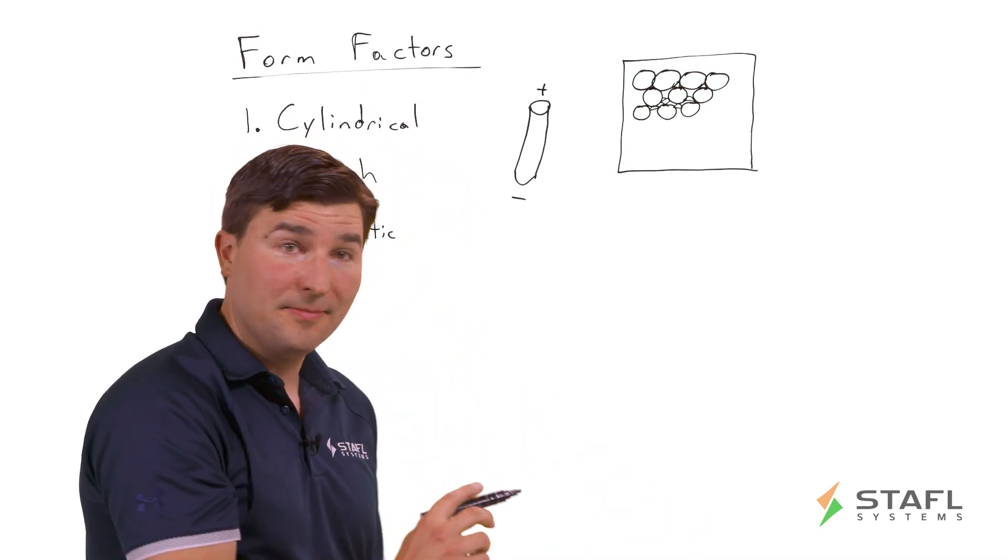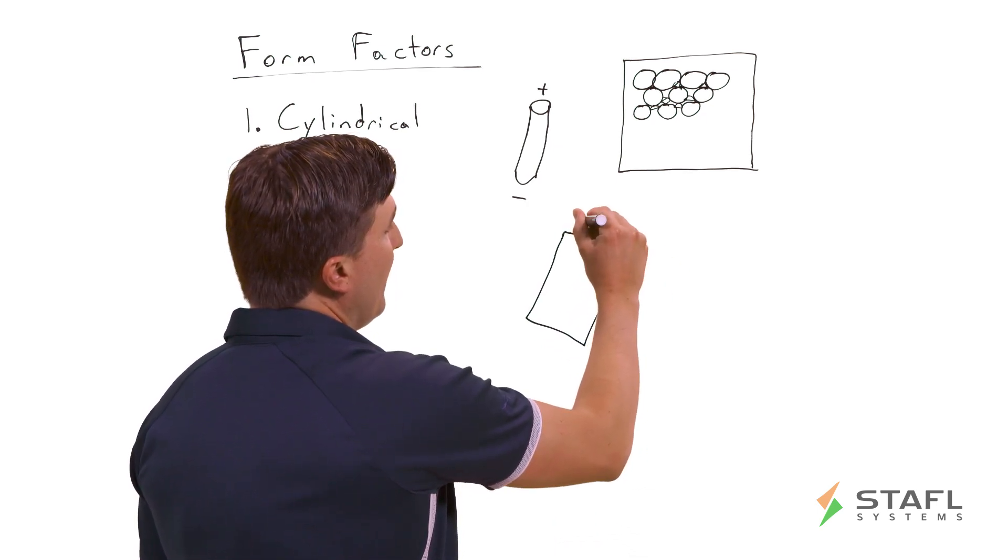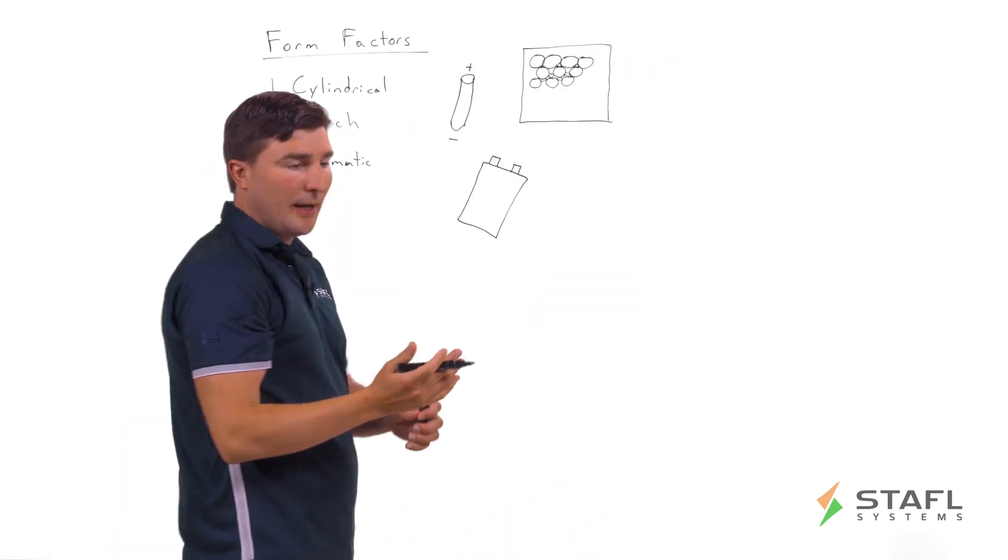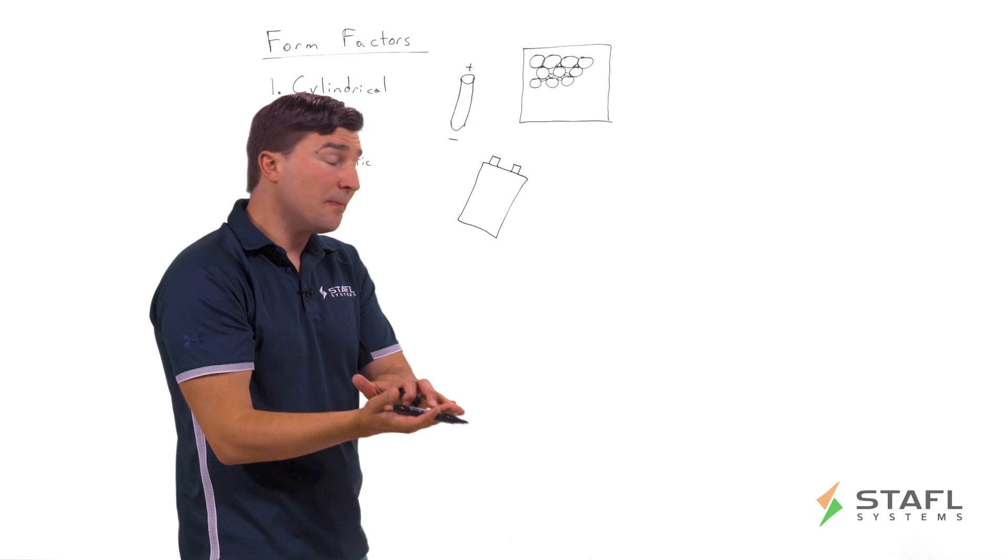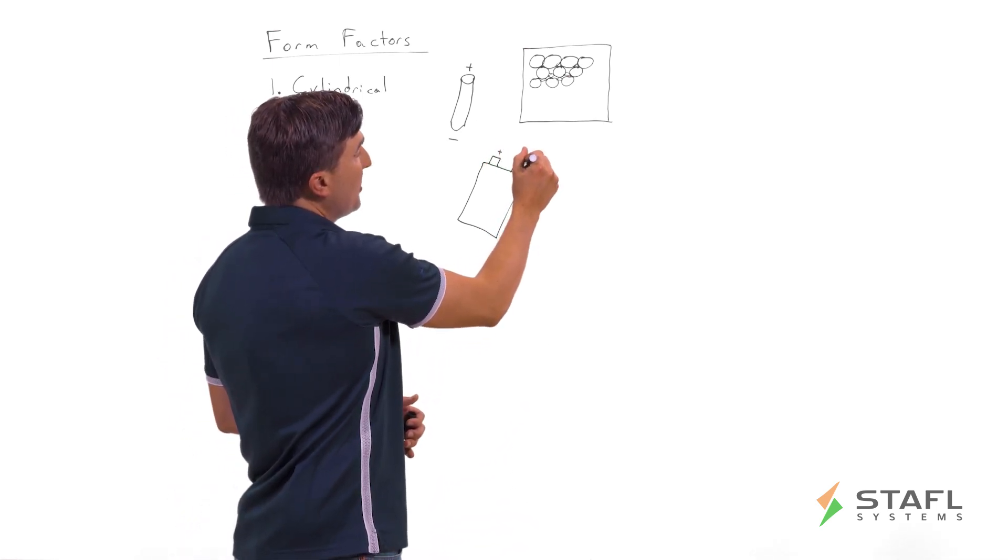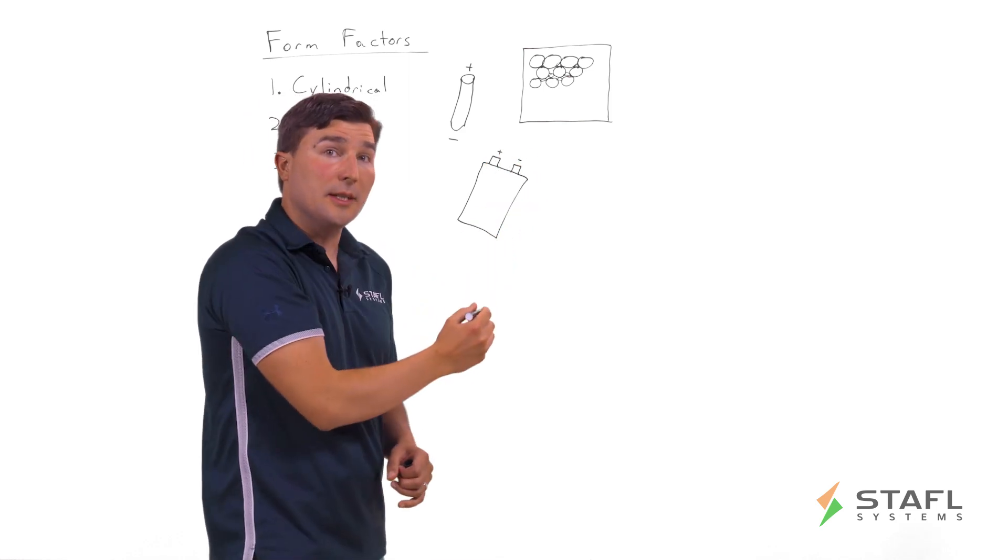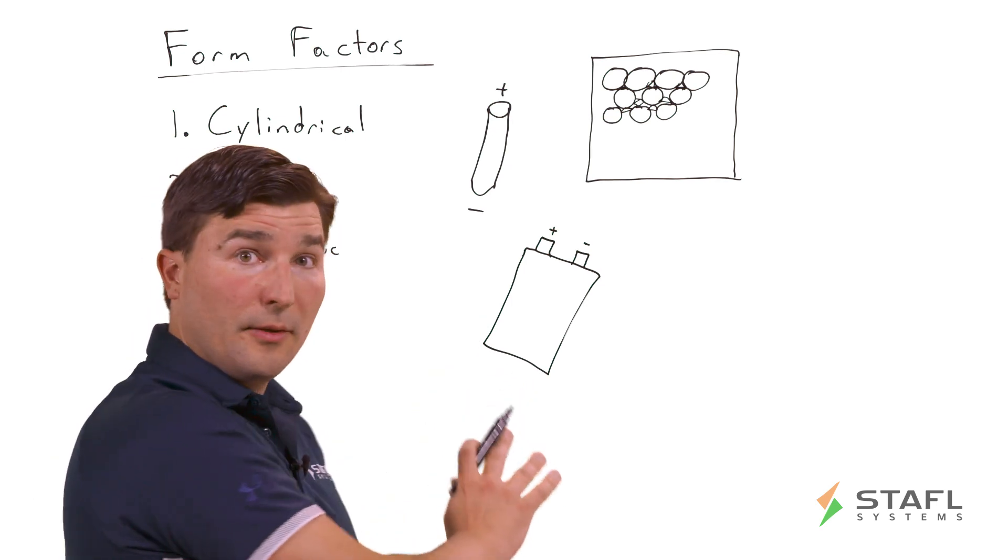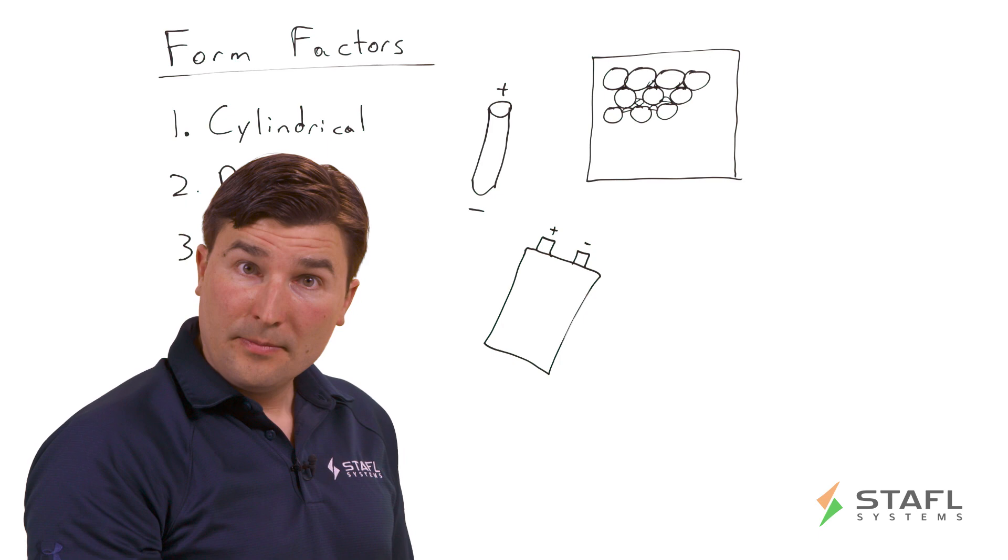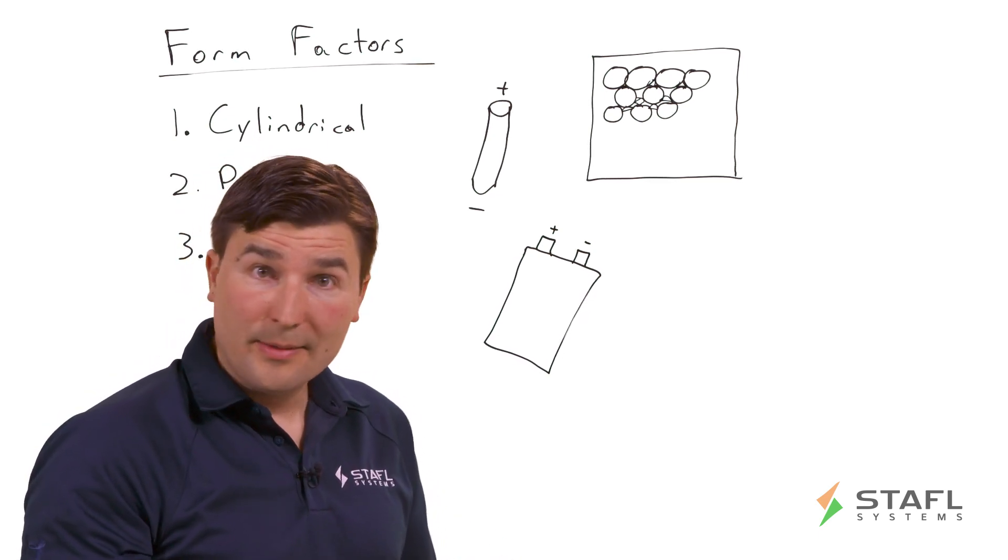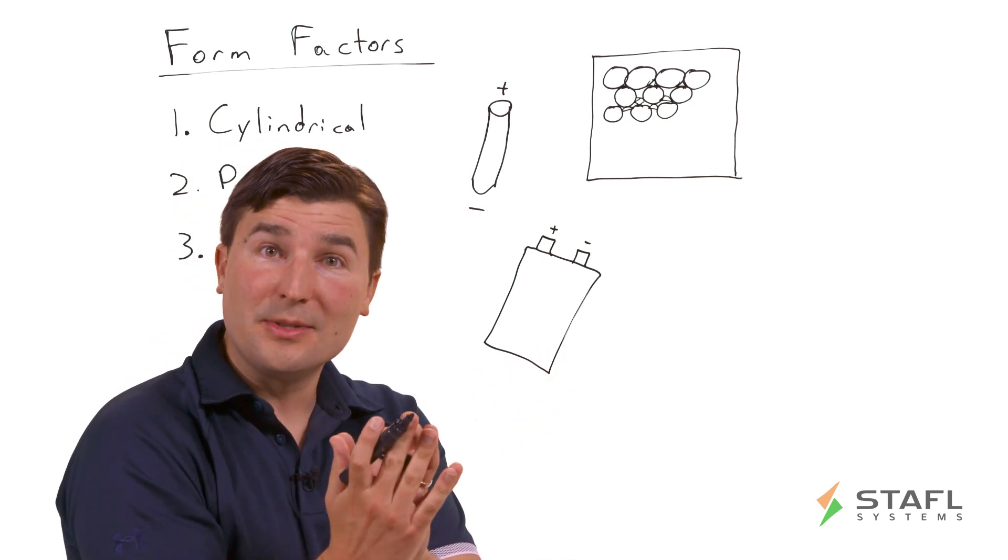Let's talk about the pouch cell now. The pouch cell typically is a fairly thin, as you can imagine, pouch where there are a number of anode and cathode layers stacked on top of each other with a positive and negative terminal exposed to either at the top or in some cases you have a positive terminal on one side and a negative terminal on the other. Some of the benefits of this cell form factor is it's generally speaking slightly higher energy density and higher achievable energy density in a pack, because since it's effectively rectangular, you can pack them together in a much denser fashion.